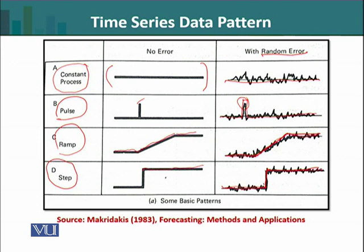In the first type, no shift in level is visible. In the second — the pulse — the shift is temporary for a certain time interval, after which it returns to its original level. In a ramp, the data moves gradually from one level to another — it is a gradual increase. Whereas in a step, the level shifts suddenly. In this way, we can identify different patterns.